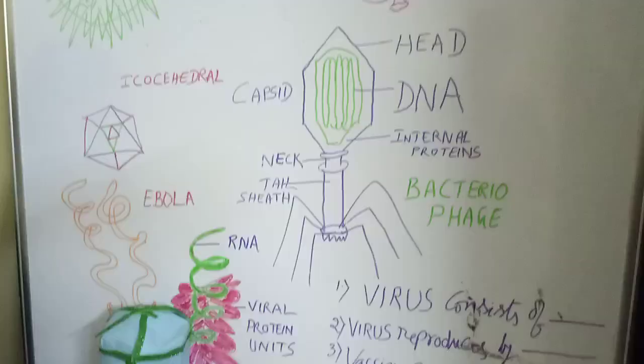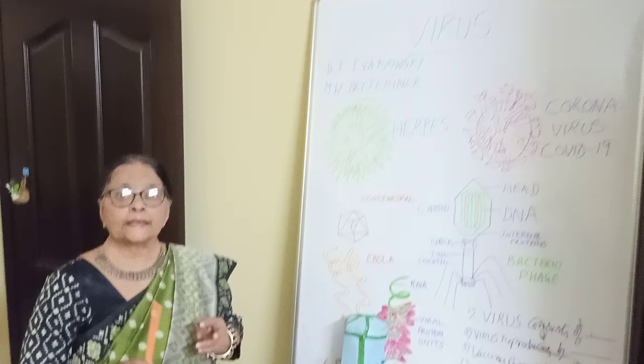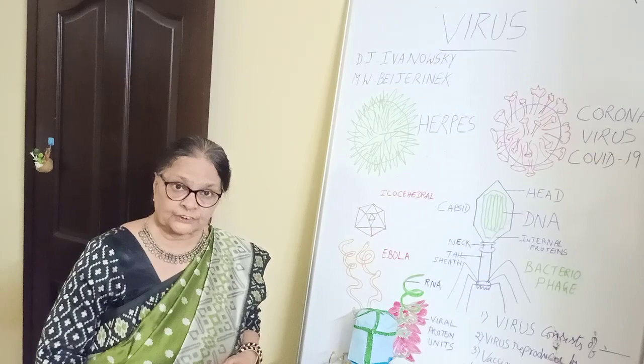Let me conclude with some questions. Virus consists of DNA or RNA and a protein coat. Virus reproduces by injecting its DNA material into the living host cell. Vaccines prevent viral infection by creating an immune response inside the host.